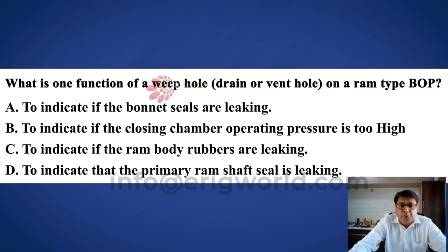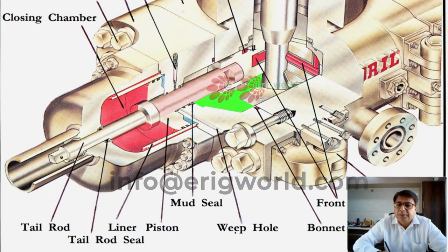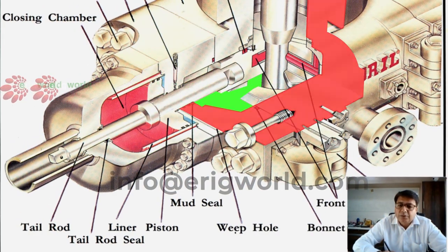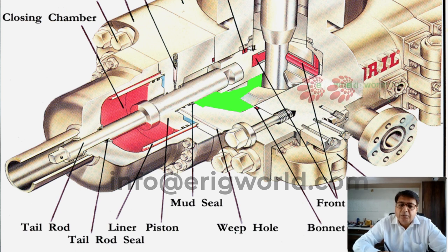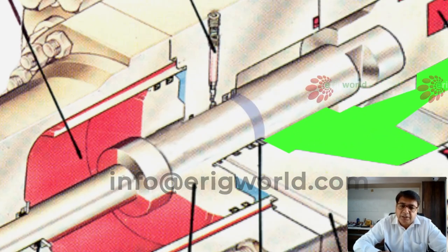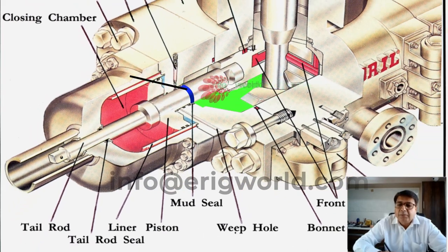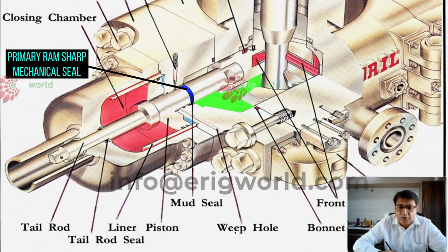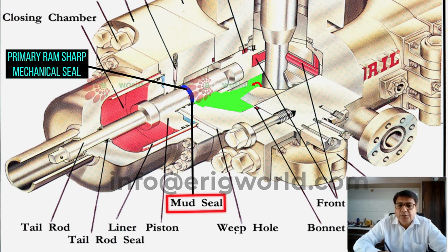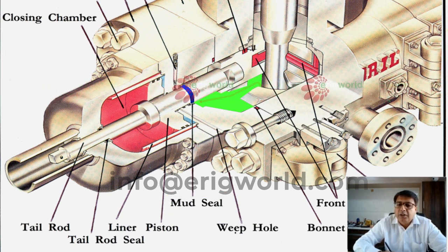What is the function of a weephole? As you can see, this is a ram shaft which is metal, and the body is also metal, so metal to metal there is no sealing. So what they did is they gave one seal — this is the mechanical seal on the ram shaft. This is called the primary ram shaft mechanical seal, or mud seal. The purpose of this mud seal is to hold the wellbore pressure.